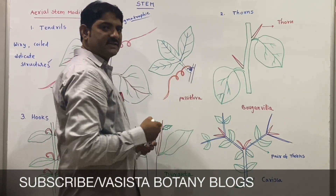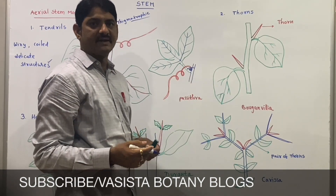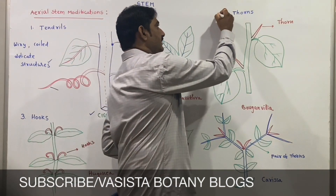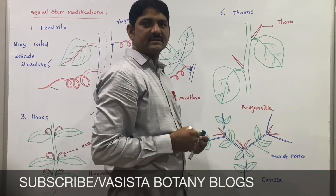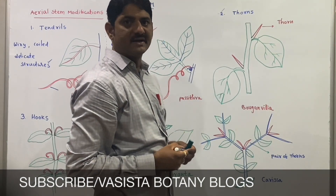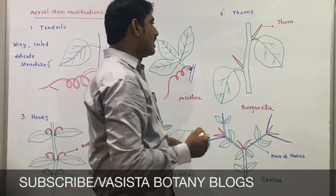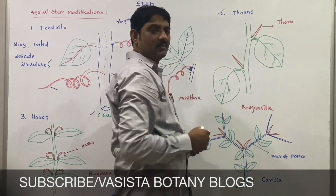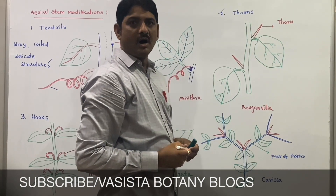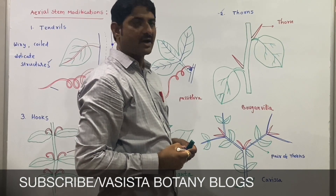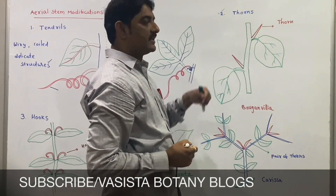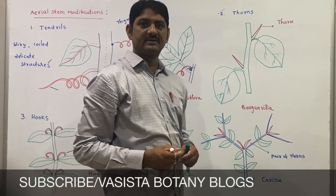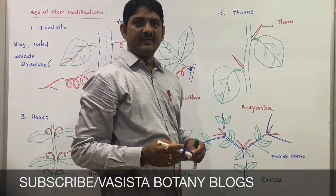All Cucurbitaceae members generally consist of tendrils. The second modification is thorns. Thorns are hard, woody, pointed, straight structures. They are known as thorns.